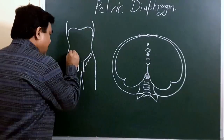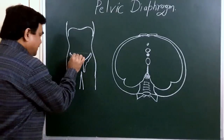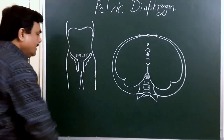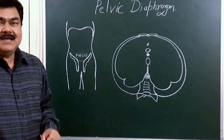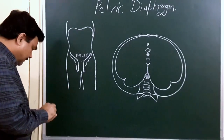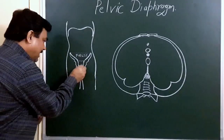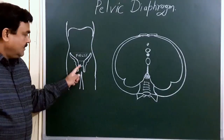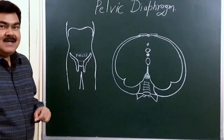From here to here is the false pelvis, also known as the greater pelvis. This is the pelvic brim. Here is the position of the pelvic diaphragm. From the pelvic brim to the pelvic diaphragm, this is the true pelvis or lesser pelvis.